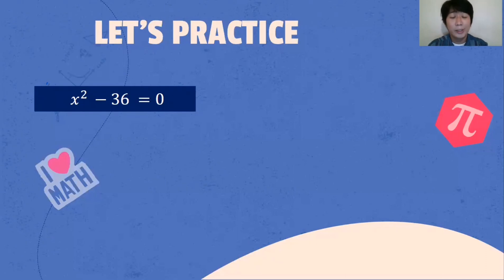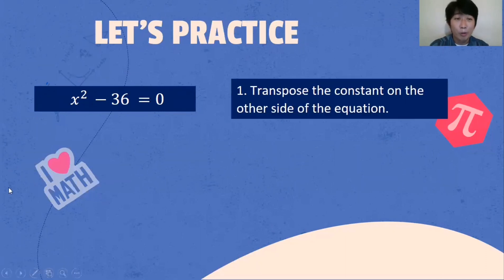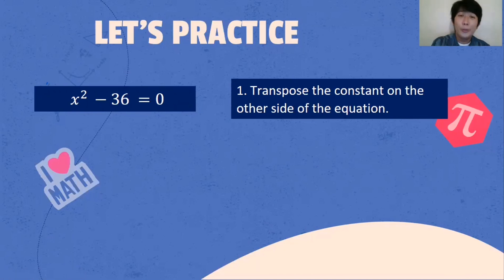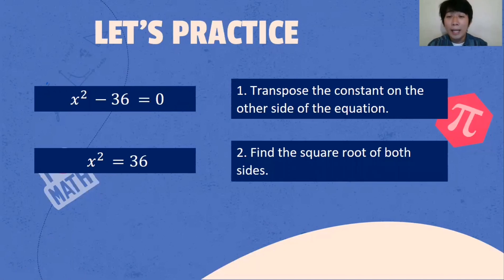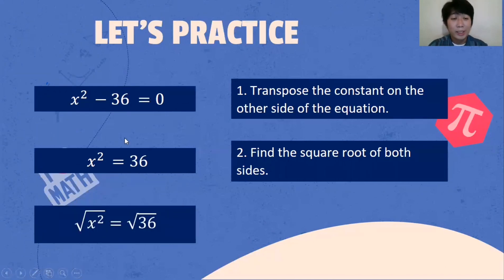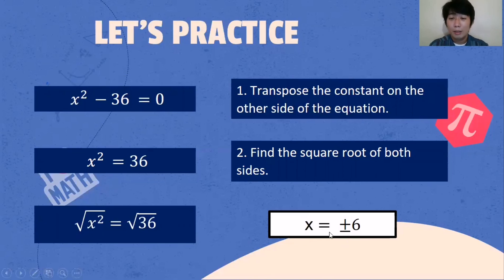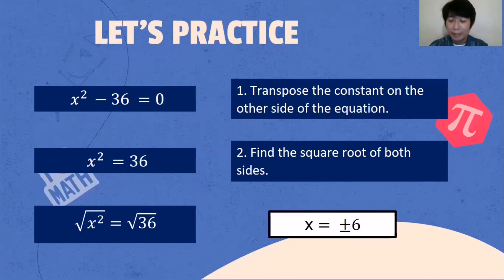Next example: X squared minus 36 is equal to 0. The first step — we transpose the constant on the other side of the equation. Make sure when you transpose one term from one side to another, the sign will be changed. So from negative, it will become positive 36. The next step: find the square root of both sides. The square root of X squared is X, and the square root of 36 is positive and negative 6. That means the values of X are positive and negative 6.